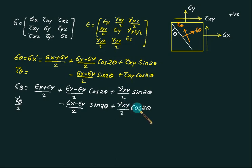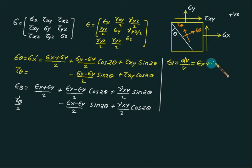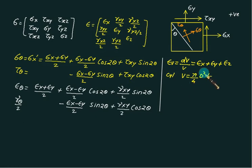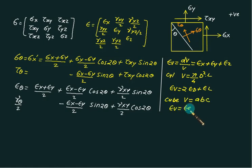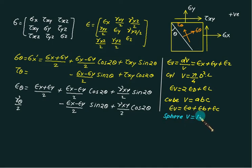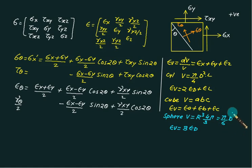Volumetric strain epsilon_v is defined as change in volume upon original volume (dV/V), and is normally given as epsilon_x + epsilon_y + epsilon_z. For a cylinder, volume = π/4 · d² · l, so epsilon_v = 2·epsilon_d + epsilon_l. For a cube with a = b = c, epsilon_v = 3·epsilon. For a sphere, volume = π/6 · d³, so epsilon_v = 3·epsilon_d.